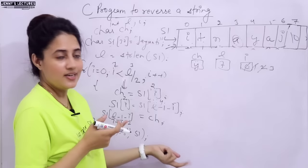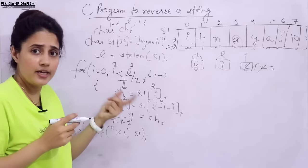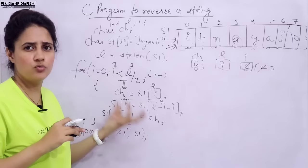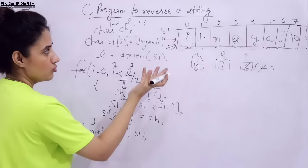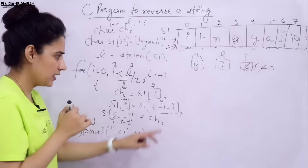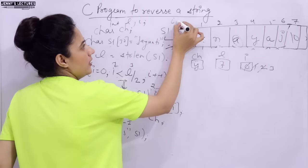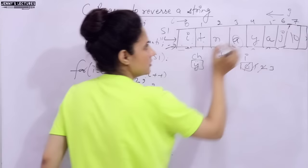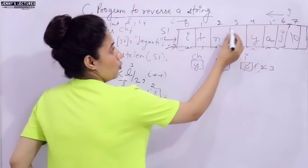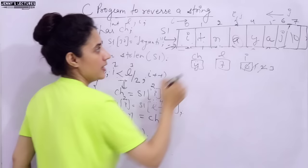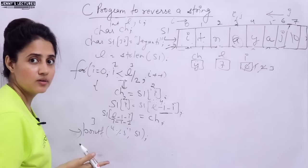There is an alternative approach. Instead of the formula L-1-i, you can use two variables: i starting from the beginning and j starting from the end (L-1). Increment i and decrement j. Once i and j become equal or cross, stop the loop. This two-pointer approach is another valid way to reverse the string.